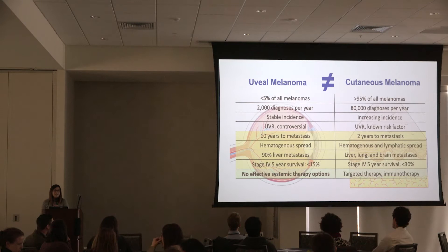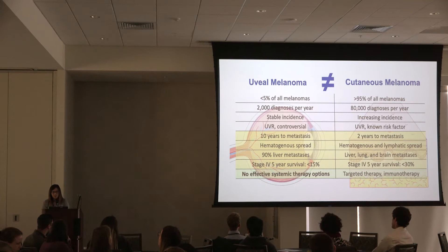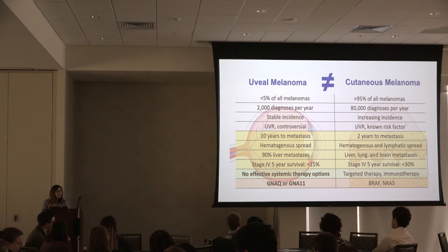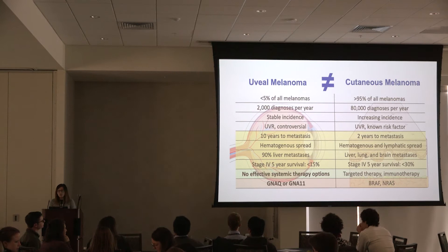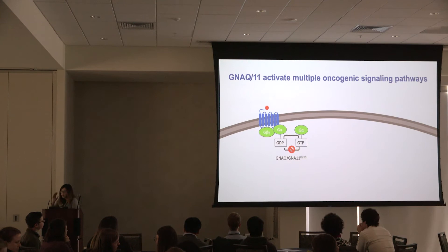This is in stark contrast to patients with metastatic cutaneous melanoma, in which targeted therapy is available for patients with BRAF mutations, and immunotherapy is quite effective as well. This may be due to differences in driving mutations: in cutaneous melanoma the most common driving mutations are in BRAF or NRAS, whereas the majority of uveal melanomas have driving mutations in GNAQ or GNA11.